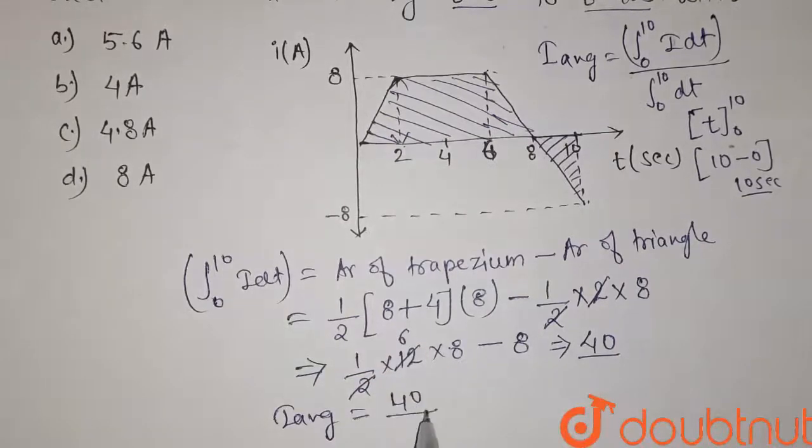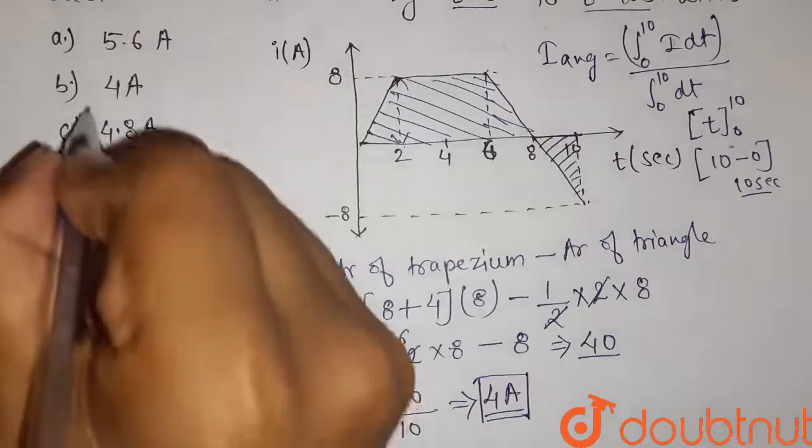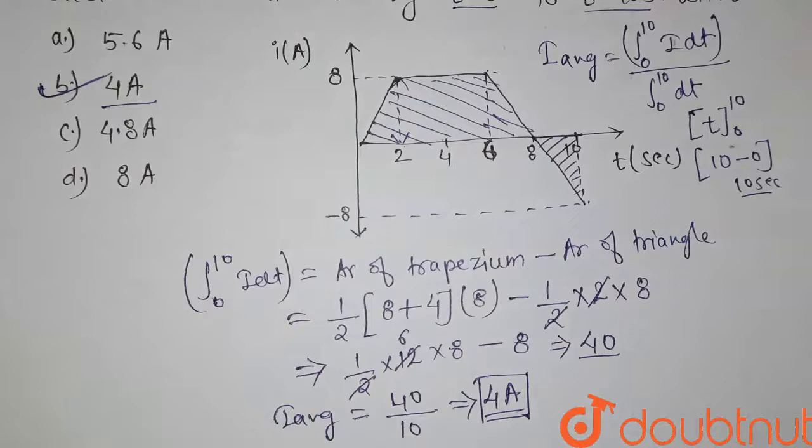Now i average will be equal to this value, that is 40, divided by this value, so that is 10. It is finally equal to 4 ampere. So the average value of current for this graph is equal to 4 ampere. Here option b is 4 ampere, so this will be the right answer for this question. Thank you.